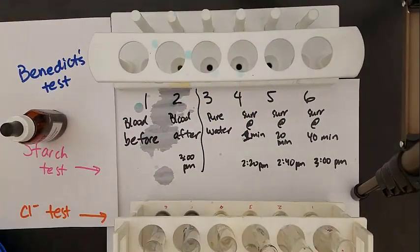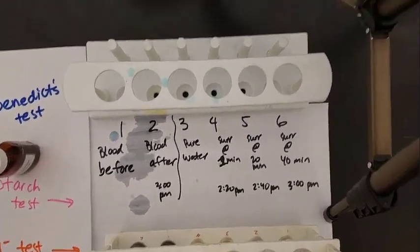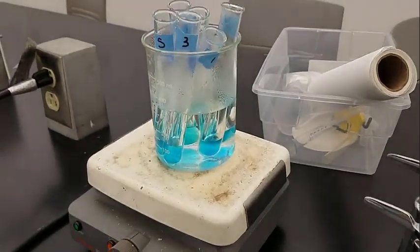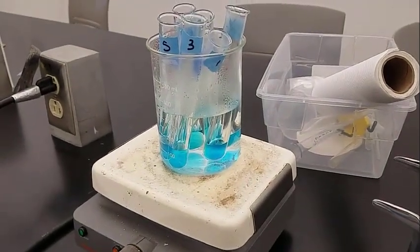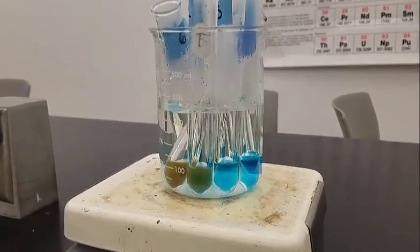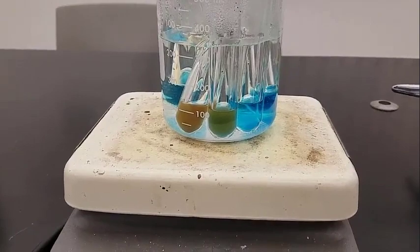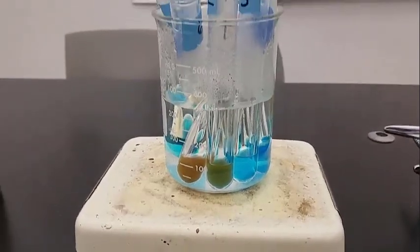We'll put these into a large beaker sitting on a hot plate with boiling water. You'll see it start to boil in a couple minutes. We're watching for color change. Some test tubes are starting to turn greenish and reddish. They're not transparent anymore—you can't see through them. That means there's a solid there.